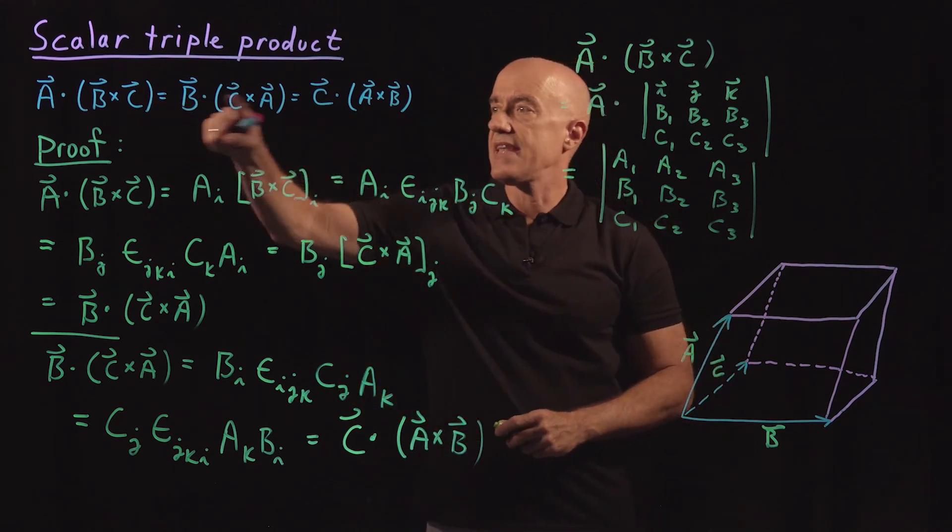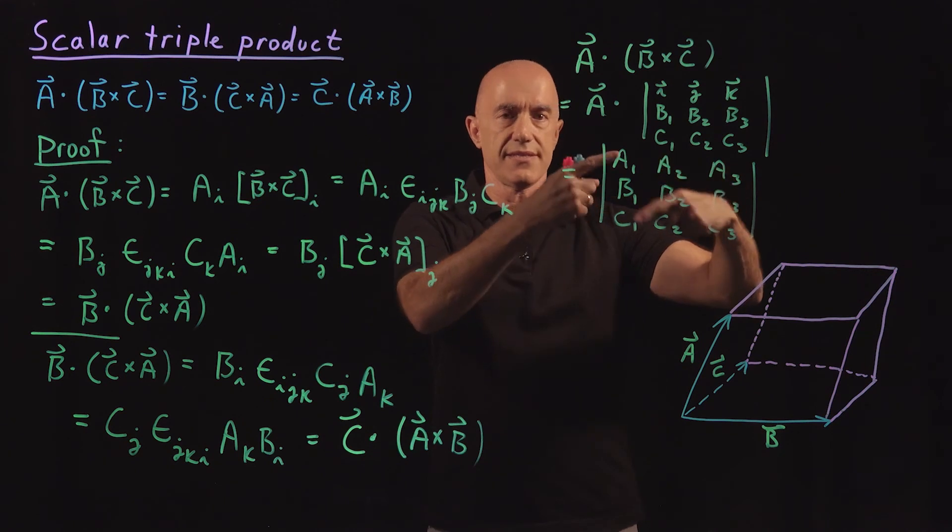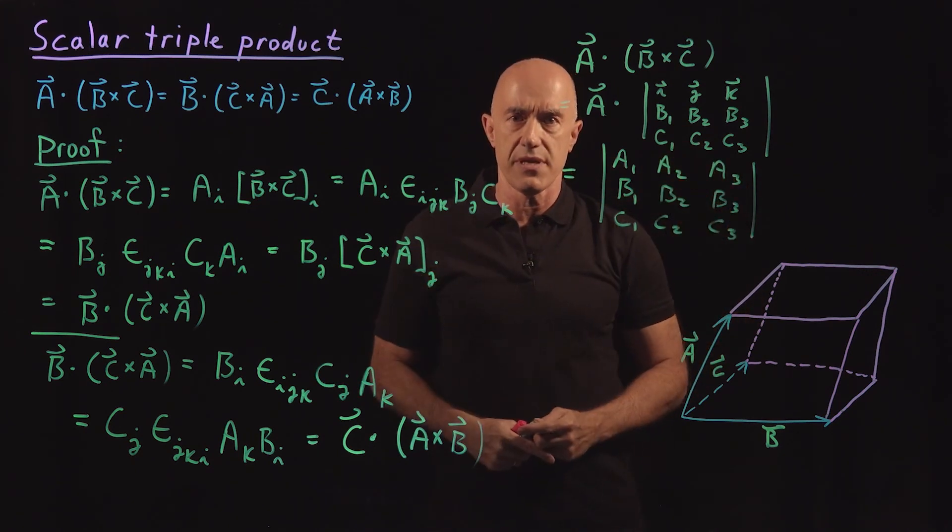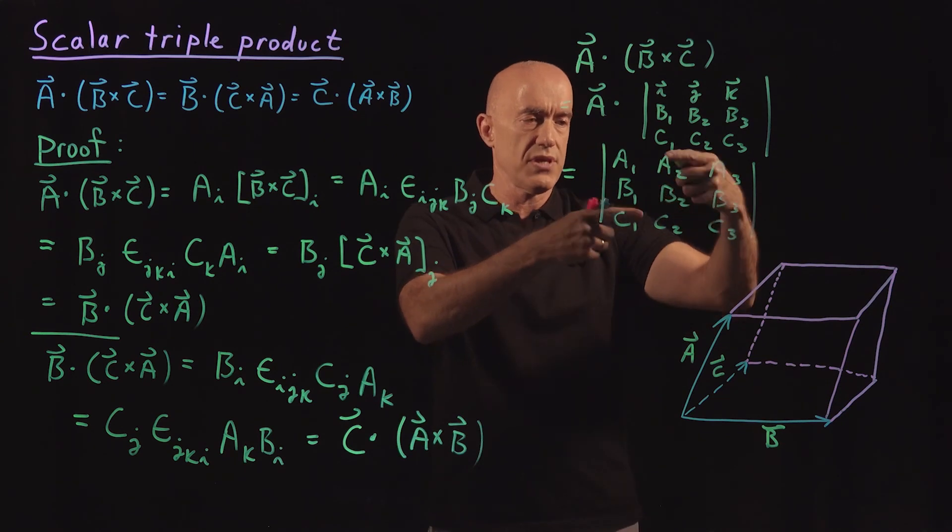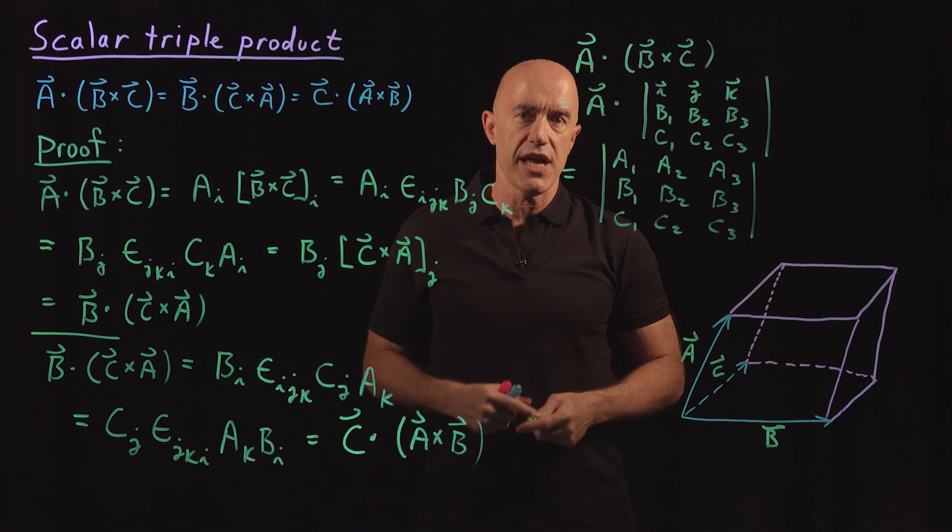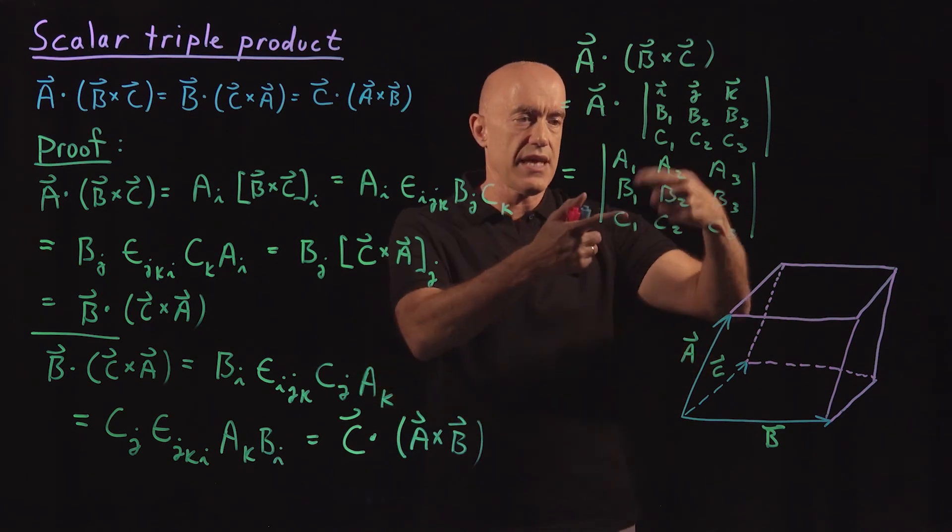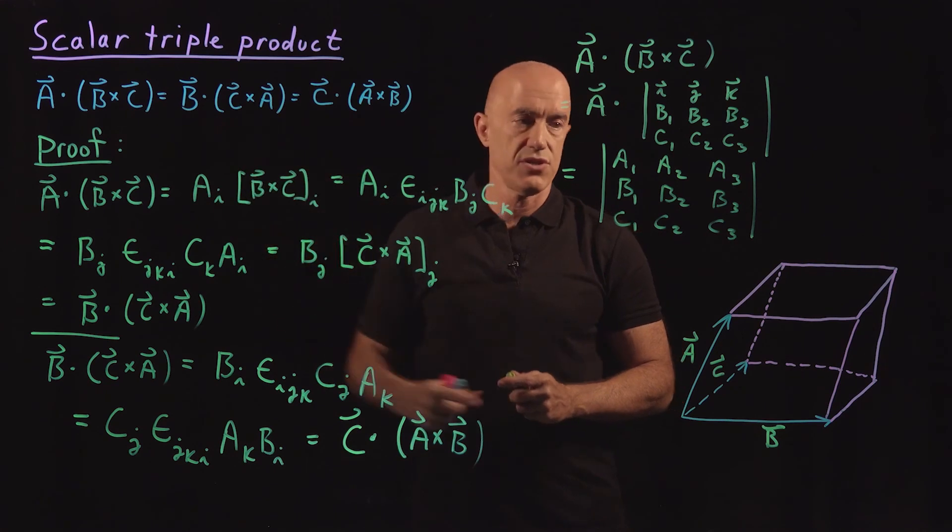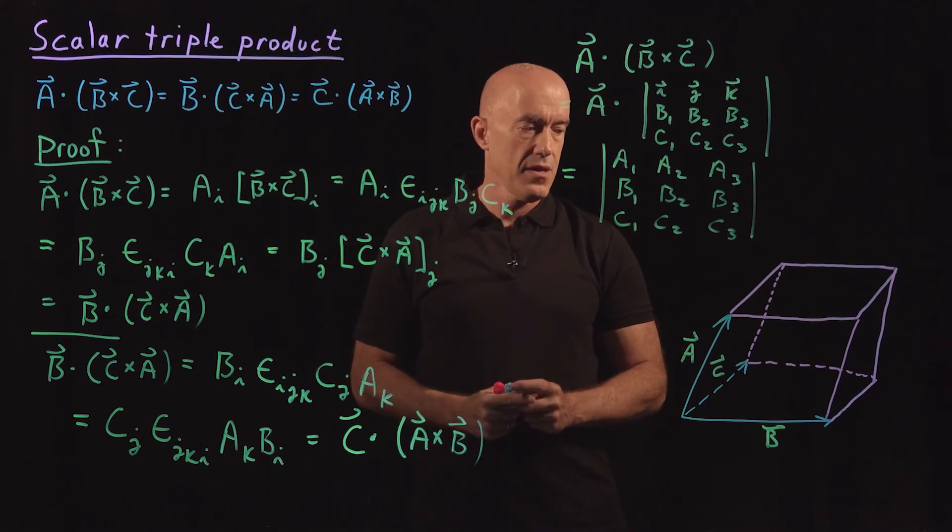And this identity here is basically just the cyclical permutation of the rows of the determinant. If you keep the rows in the same cyclical order, then the determinant doesn't change. That you have an identity with the determinants. And that's what this relationship is saying.